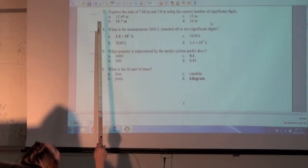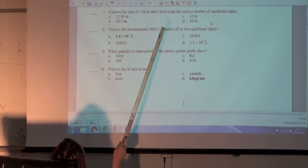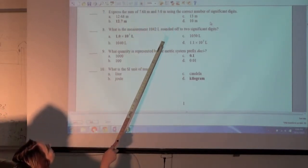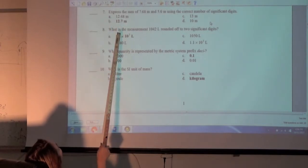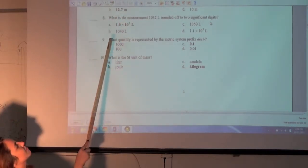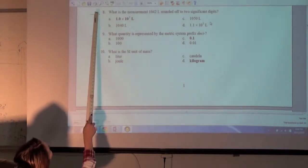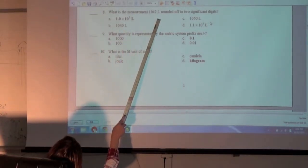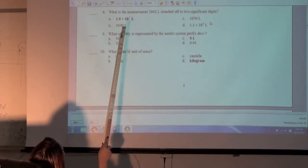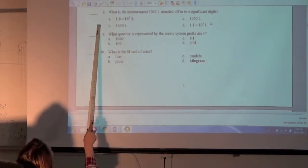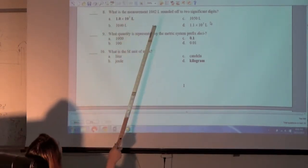Express the sum of 7.68 millimeters and 5.0 millimeters using the correct number of significant digits. B, 12.7 millimeters. What is the measurement 1042 liters rounded to two significant digits? A, 1.0 times 10 to the power of 3 liters.